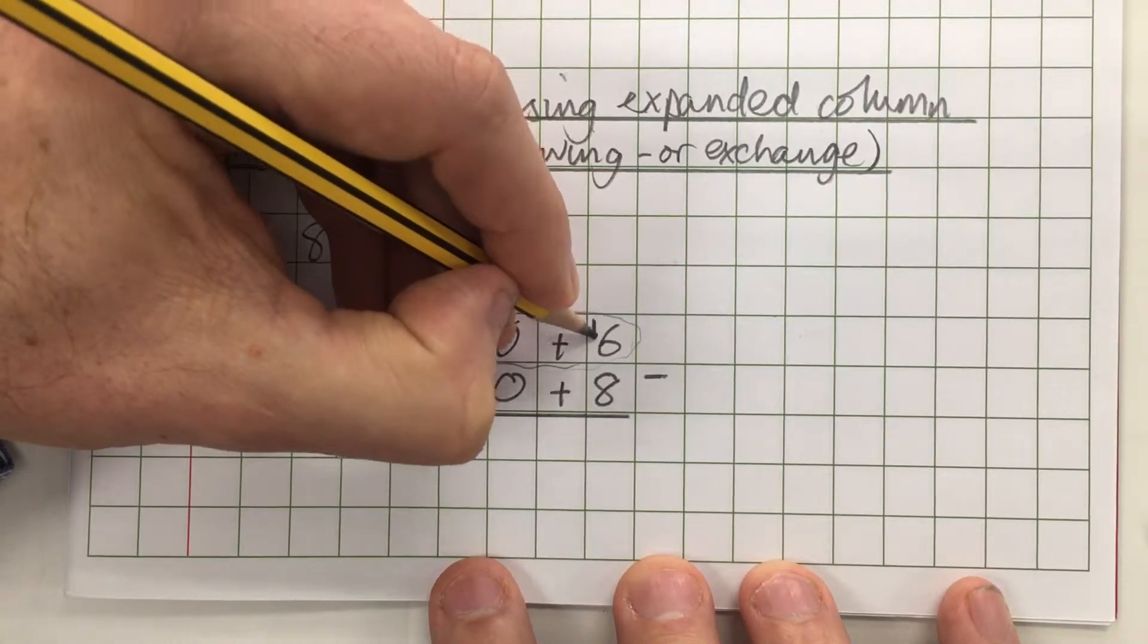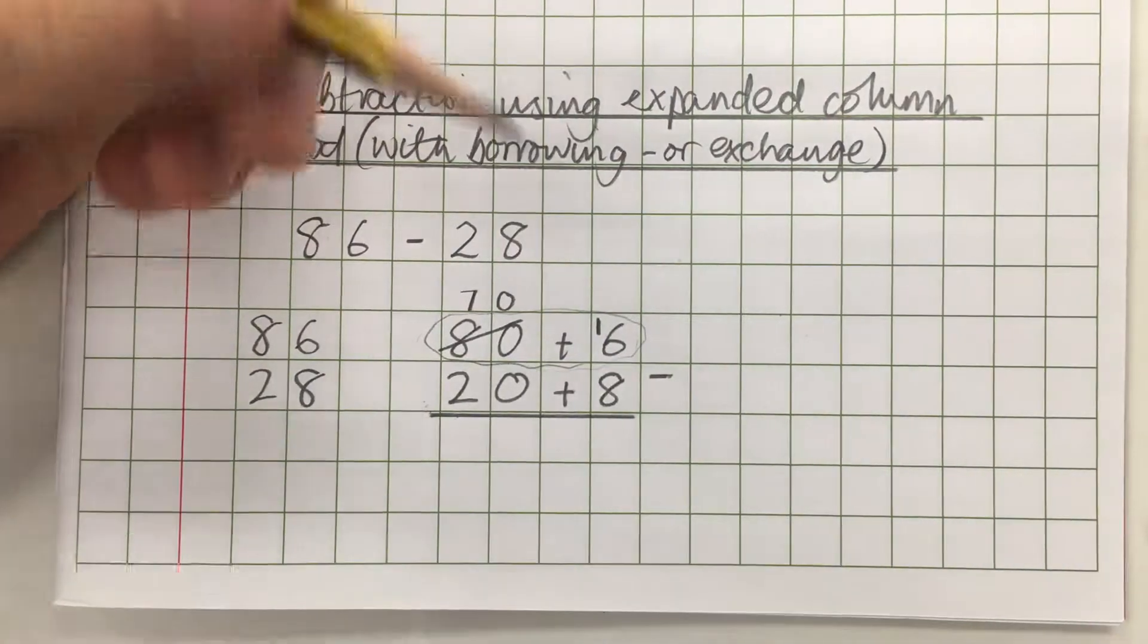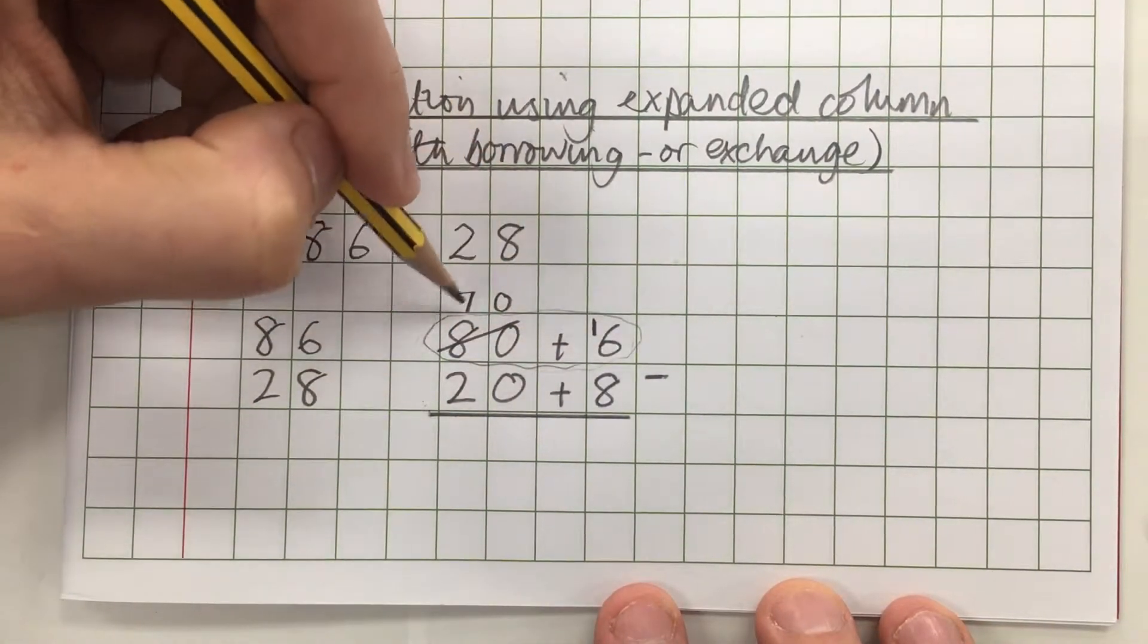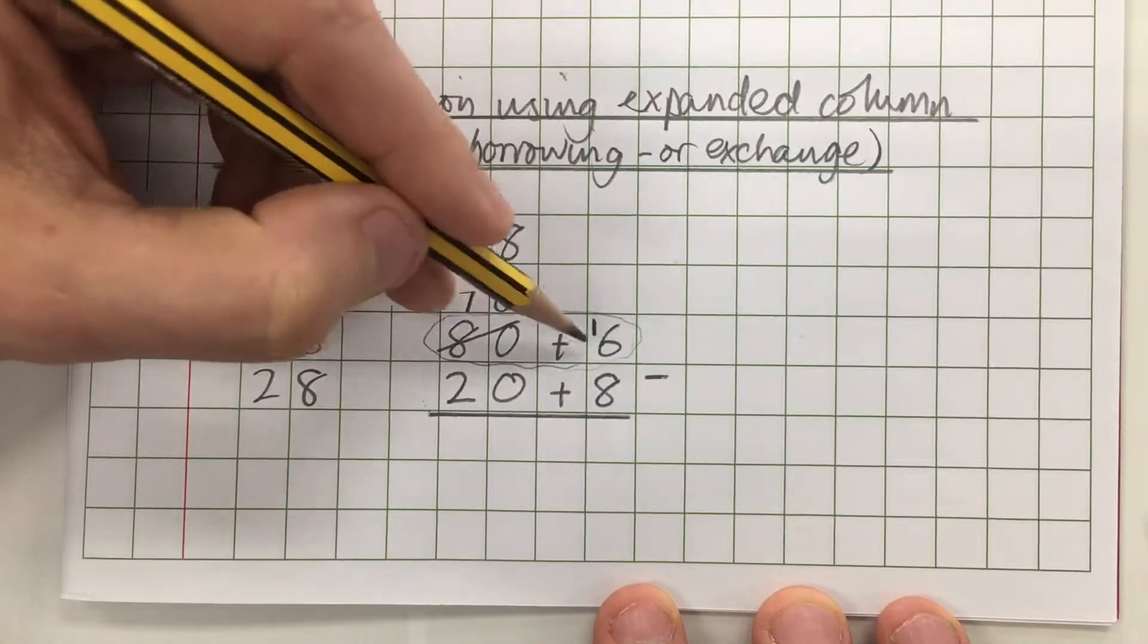Now 10 add 6 is 16 so I'm just going to mark it on as a small 1 above the number there. So I haven't changed the value of this number - I've still got 70 add 16 in the top number which is the same as 80 add 6.